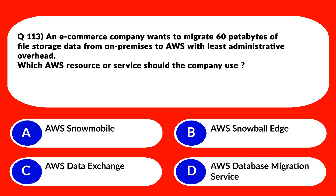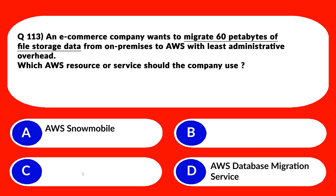This question will test your migration-related concepts, especially with regard to large amounts of data. Let's look at option B first. B says AWS Snowball Edge. Snowball Edge has storage capacity up to 210 terabytes, which is not good enough for 60 petabytes of data as required by the question. So B is out. Let's move to option C. C says AWS Data Exchange. AWS Data Exchange cannot help with the migration of data as it's not a data migration service. Therefore, we can eliminate this.